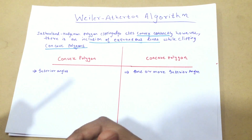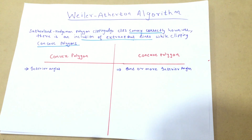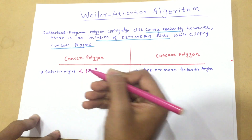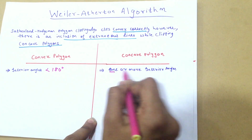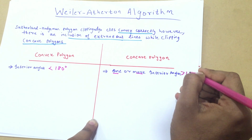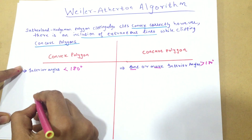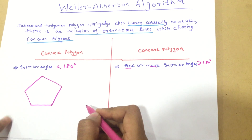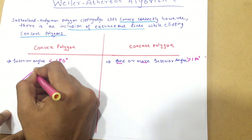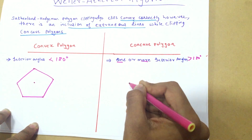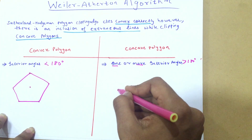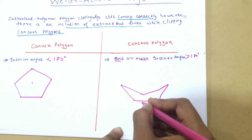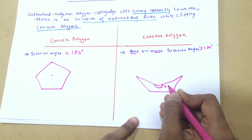Before we jump into that, I'm going to explain what a convex polygon is and what a concave polygon is. A convex polygon is a polygon whose interior angles are less than 180 degrees, whereas a concave polygon is where one or more of the interior angles are greater than 180 degrees. For example, if I take this figure, this figure is a convex polygon. However, if I bring this edge right here as shown in the figure I'm drawing, this becomes a concave polygon because this angle is greater than 180 degrees.